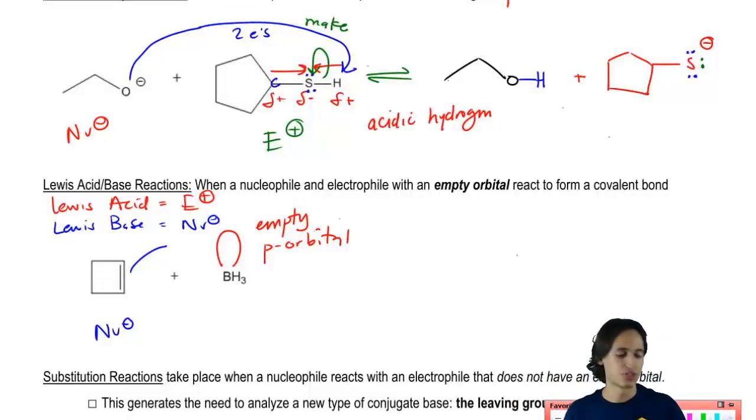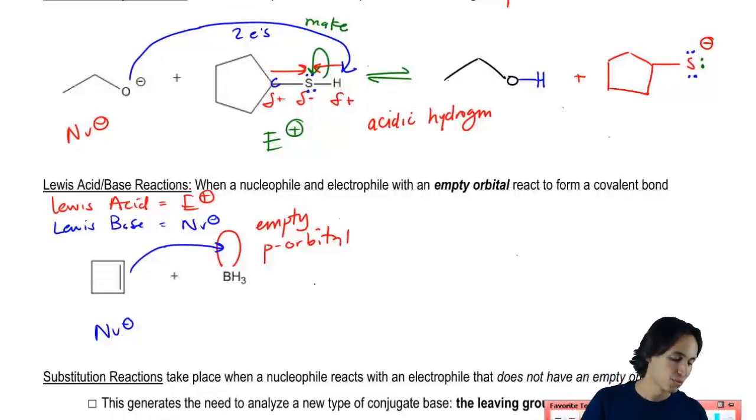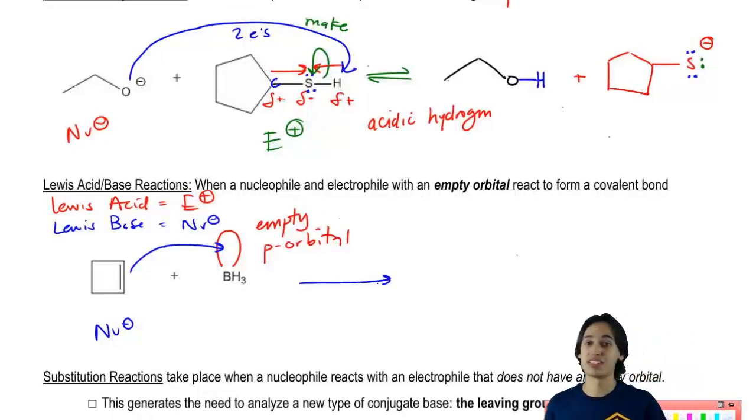So I'm going to go ahead and draw the rest of my mechanism. My electrons would go straight into that orbital. So my end products here, when it's a Lewis acid-Lewis base, we actually don't use the equilibrium arrows. We use just a forward arrow. And the reason is because what we're going to get is a new covalent bond without the exchange of hydrogens.